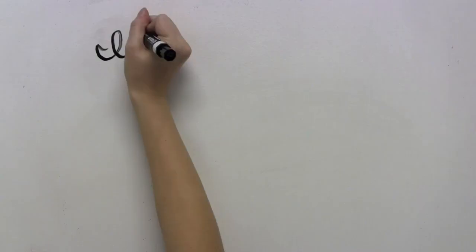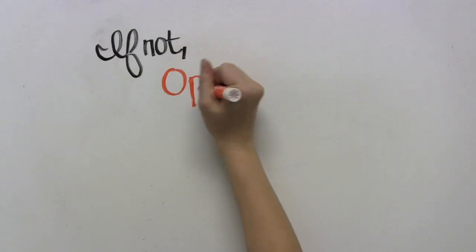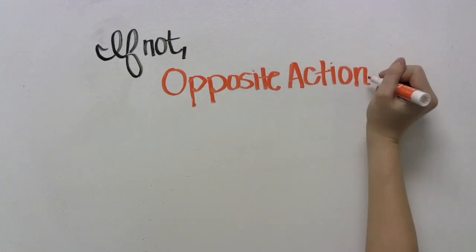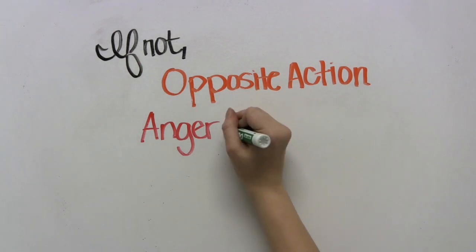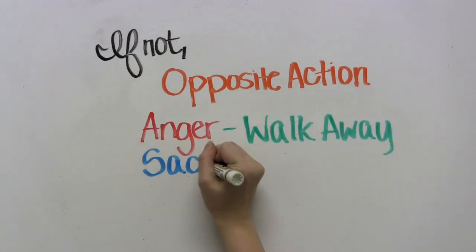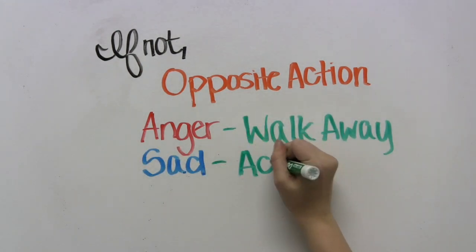...identify what will be the opposite to the action urge of the emotion you're feeling. For anger, the opposite of yelling or attacking would be to walk away. For sadness, the opposite of withdrawing would be to get active or involved. And for feeling afraid or worried, the opposite to running away and hiding would be approaching or confronting the situation.